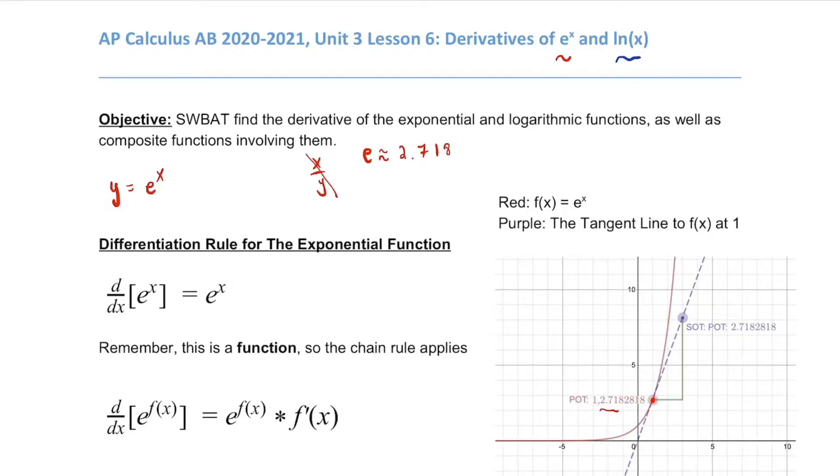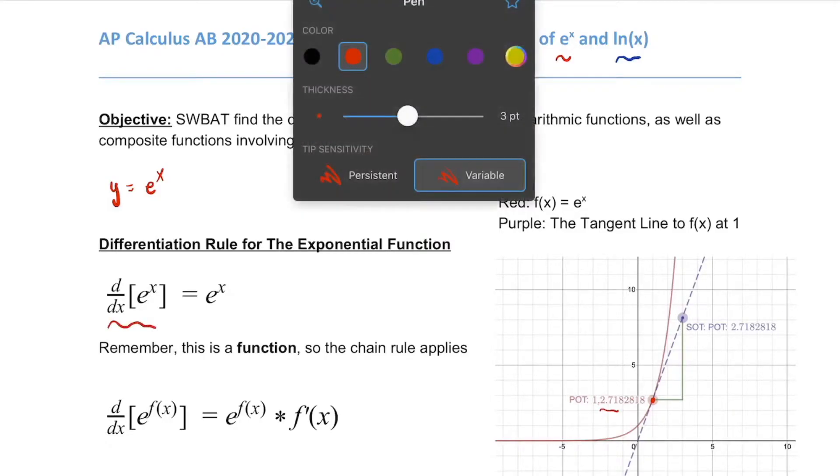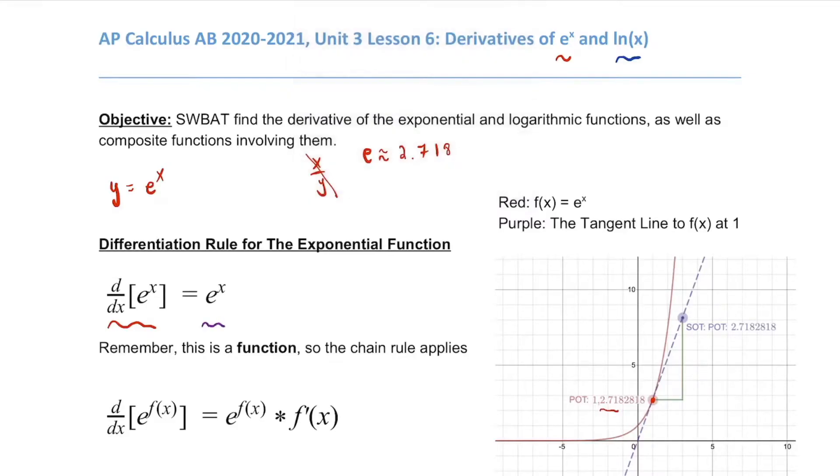It has this really interesting property. The derivative of e to the x is e to the x. And that's the only function in the whole world for which that's true. It is its own derivative. And you can see that's true in the little Desmos graph that I've made. Remember, the derivative is the slope of the tangent line at a point. And so here, we have two things plotted. I have e to the x and its tangent line at 1. And as you can see, e to the first is 2.718 and so on. And the slope of the tangent line is 2.7182818. The slope of the tangent line is the same thing. And you can draw that at any point on the graph. The y coordinate is the same as the slope of the tangent line. There's a really interesting fact here.